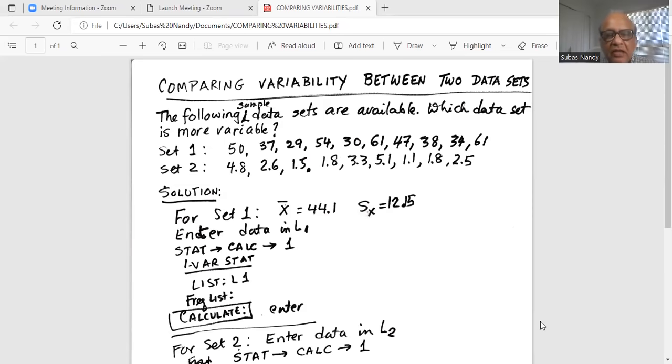Then we press the stat button, then highlight calc on the top row. Calc. Okay. And in calc, we will select number one, number one, which is one var stats.